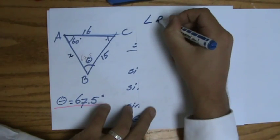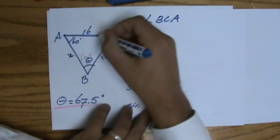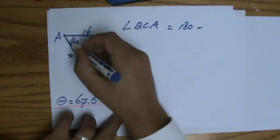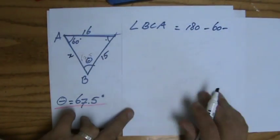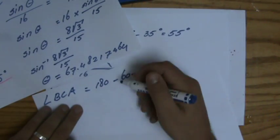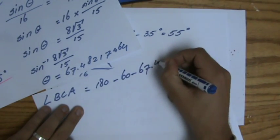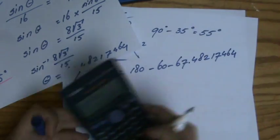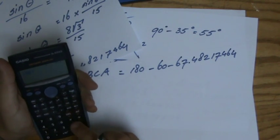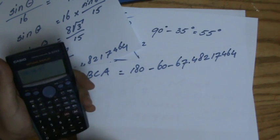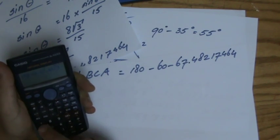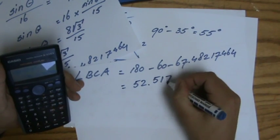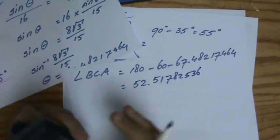And angle BCA, so that's the teammate angle, equals 180 minus 60 minus this angle. Agreed? I'm going to use all those decimals for that, just because I want to be precise in my workings. So grab my calculator. 180 minus 60 minus 67.48217464. That is 52.51782536.